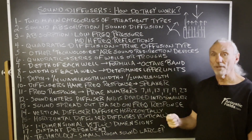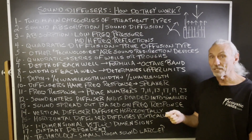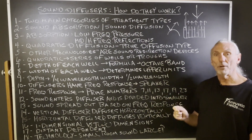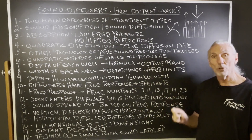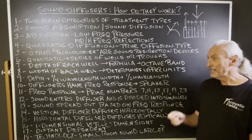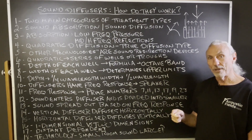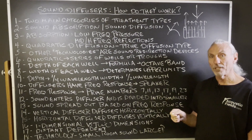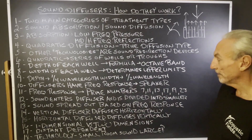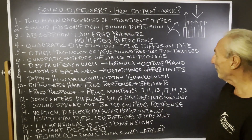A diffuser takes a large reflection and breaks it up into a series of smaller ones. A smaller reflection is harder for our brain and hearing system to localize — we can't tell how far away the distance is. That's how diffusion technology makes a small room sound larger: through the non-localization of reflection. Sound enters the diffuser, it's divided into smaller pieces, and spread out based on the frequency response.